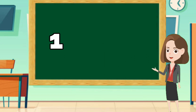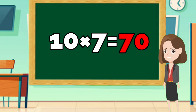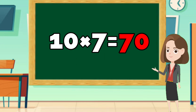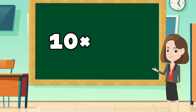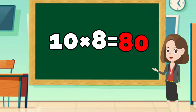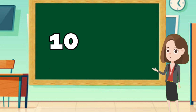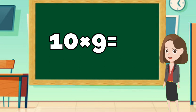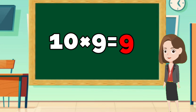Ten seven's a seventy. Ten eight's a eighty. Ten nine's a ninety.